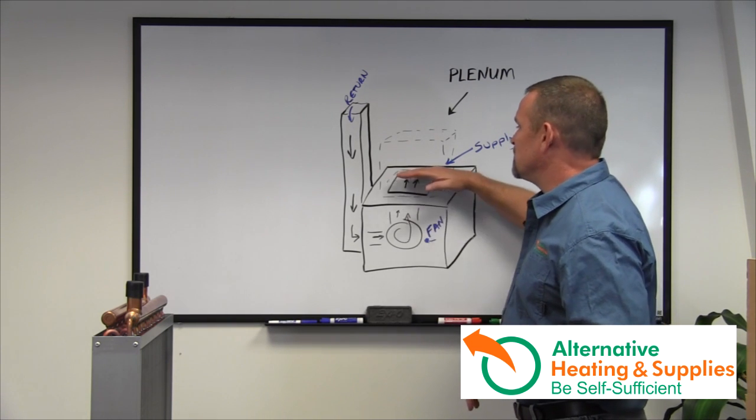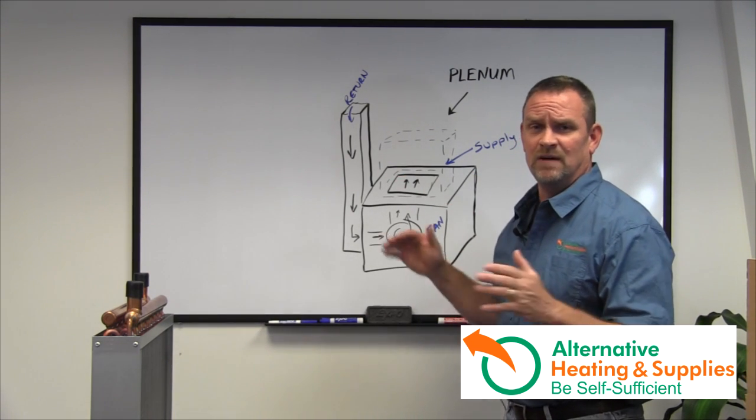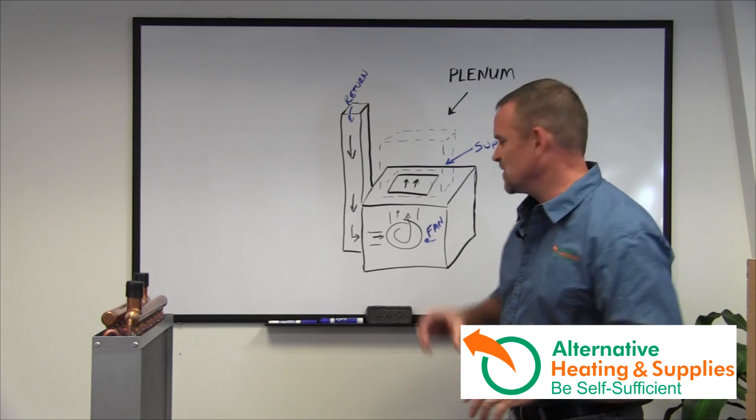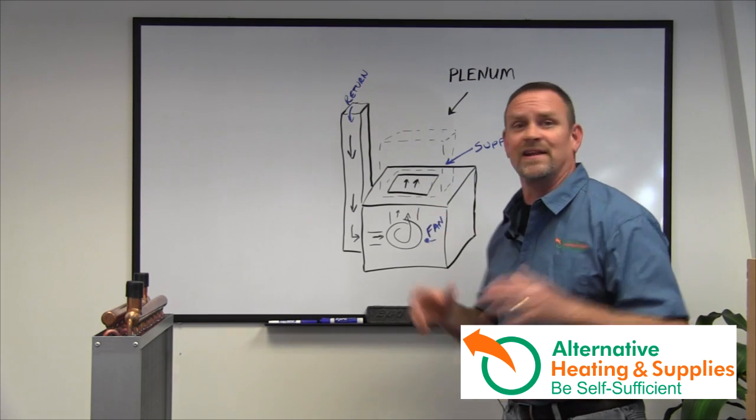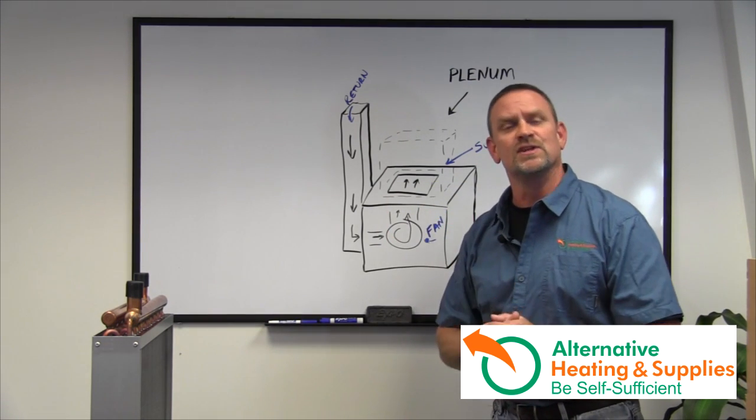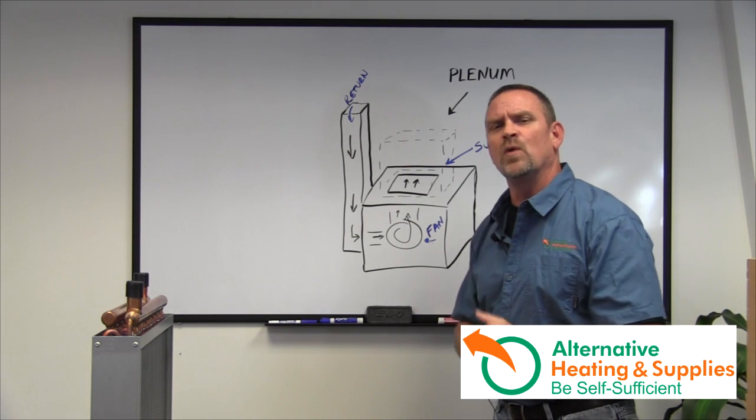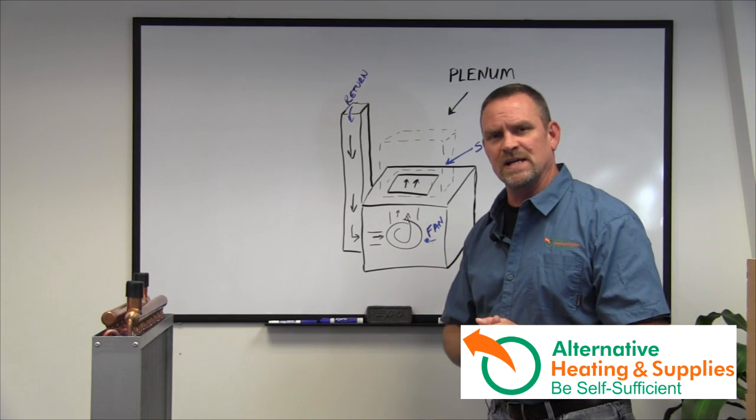So try to put your heat exchanger above any kind of sensors or anything else. They're usually mounted on the side and they're identified like a Honeywell or some kind of a silver box on the side. Try to get it away from that a little bit so it doesn't trip that sensor.